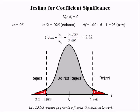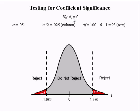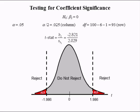This means 10 payments influence the decision to work. The second test involves the second slope coefficient, with a null hypothesis of beta 2 equal to 0. Alpha, alpha divided by 2, the degrees of freedom, and the critical values all remain the same. The T-stat is negative 1.39, which is in the do-not-reject region. Hence, we cannot reject the null at a 5% level of significance for variable X2.